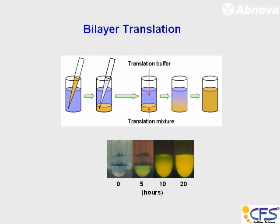This is a bilayer translation. Without using any membrane or dialysis membrane, this is what happens. You put the wheat germ extract and the messenger RNA and form two layers. In the interfacial zone, the translation reaction takes place. The byproducts are constantly pushed out of the reaction zone, and the reactants from the transition buffer are constantly going into the interfacial area until the whole mix is uniform, so the translation continues.